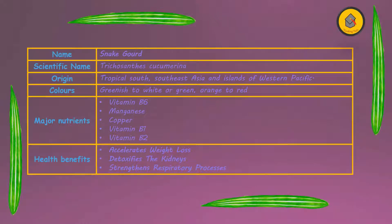Hi guys, let us know a little about snake gourd. The scientific name of snake gourd is Trichosanthes cucumberina. It originates from the tropical south and southeast Asia and islands of western Pacific.